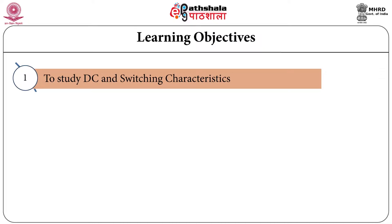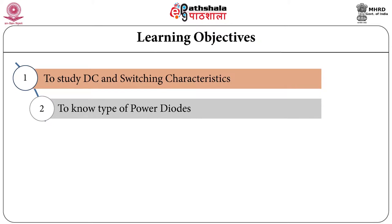After defining these parameters, the next topic will be categorization of diode according to voltage and current characteristics. After studying this there will be different types of diode like general purpose diode, fast recovery diode and the third important type is Schottky diode. After studying all these types of diodes we are going to study how to use this diode in parallel and series.